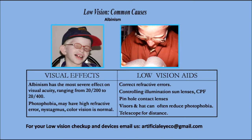Albinism — visual effects. Albinism has the most common effect on visual acuity, ranging from 20/200 to 20/400. There may be photophobia and high refractive error, nystagmus, while color vision is normal. For low vision aids: first, correct the refractive error. Then control illumination using sun lenses and CPF filters to guard against extra light entry into the eye.